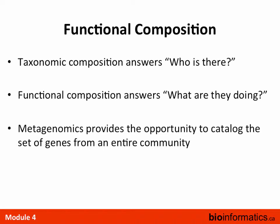Taxonomy composition answers the question of who is there — what are the organisms there — whereas functional composition answers what are they doing. It looks at the different genes and protein-coding genes within the whole metagenome as a community. Metagenome comes from multiple genomes coming together in a community — the same information you'd get from a genome annotation project, but at the community level, asking how much potential this community has to do certain functions.